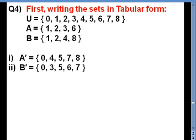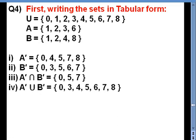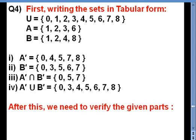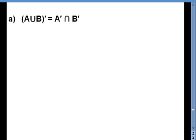B complement is all elements of U not in B, so B complement equals {0, 3, 5, 6, 7}. In the third part, A complement intersection B complement gives the common elements from these two sets, which is {0, 5, 7}. In the fourth part, A complement union B complement means all elements taken from both sets, giving {0, 3, 4, 5, 6, 7, 8}.